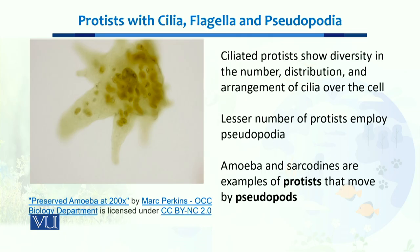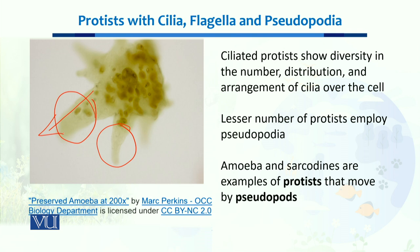When we talk about pseudopodia, amoeba and sarcodines are examples of protists that move with the help of pseudopodia. As you can see from this diagram, these are extensions of their cell membranes. Their cell membrane is very delicate, and whenever they want to move in one direction, they simply bulge their pseudopodia — the extension of their cytoplasm — in that direction, and it helps them in movement.